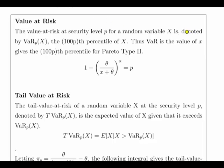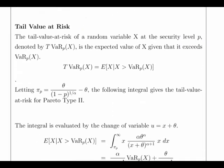I don't want to get too bogged down in details, but essentially the VaR is related to the percentiles of distribution, the 95th percentile and so on. The tail value at risk is the expected value of X given that it exceeds the VaR.